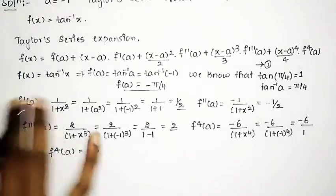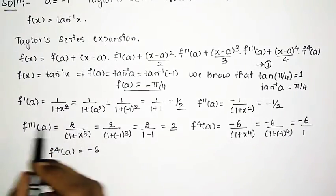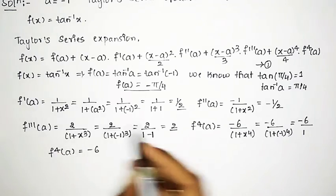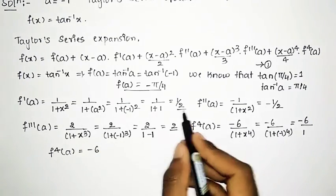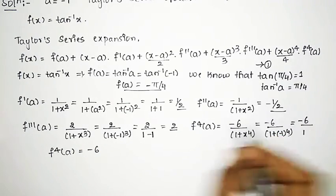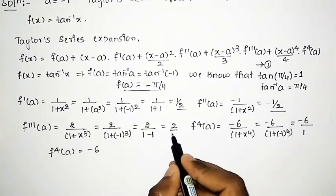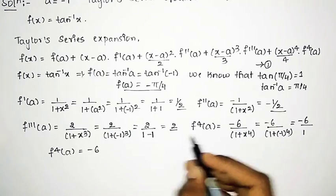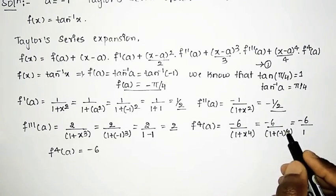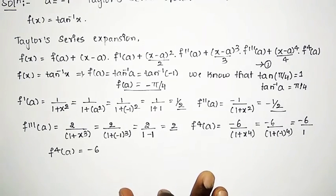So we have obtained all the values: f(a) = minus π/4, f'(a) = 1/2, f''(a) = minus 1/2, f'''(a) = 2, and f⁴(a) = minus 6. Now we shall substitute all these values into the Taylor series equation.